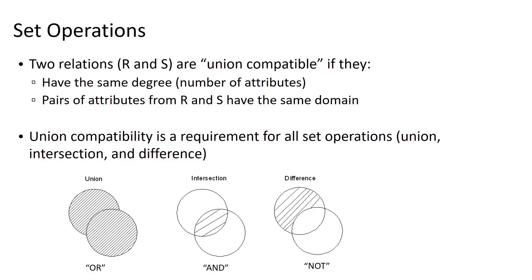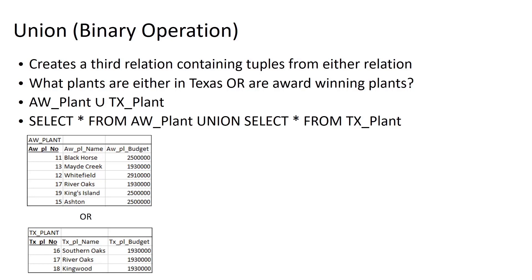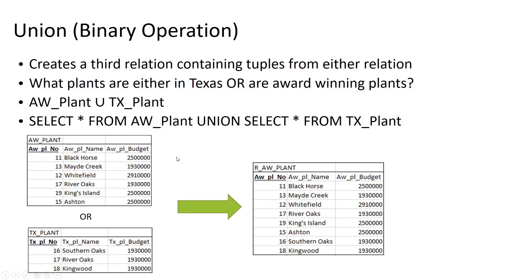Union creates a third relation containing tuples from either relation — the two relations must be union compatible. To find what plants are either in Texas or are award-winning, we take the union of AW_plant and Texas_plant. The symbol used in relational algebra is a stretched U-shape. The SQL equivalent is: SELECT * FROM AW_plant UNION SELECT * FROM TX_plant, giving us all tuples present in either relation.